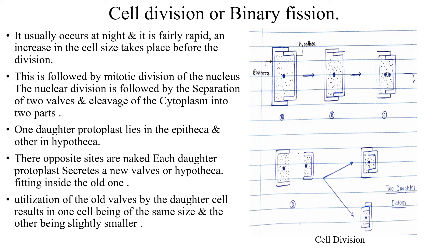The hypotheca of the parent cell is carried forward and that cell remains the same size. Whereas in the other daughter cell, the hypotheca is the smaller one — it becomes small. As divisions proceed, the cell size reduces progressively, until a point where binary fission or cell division does not take place any further.